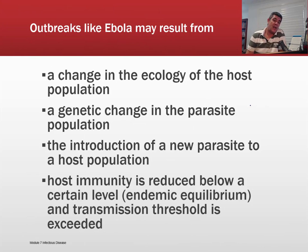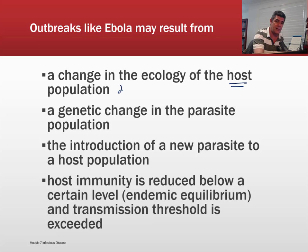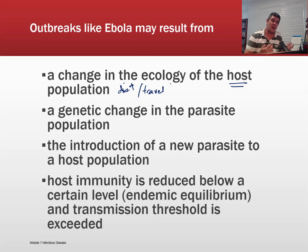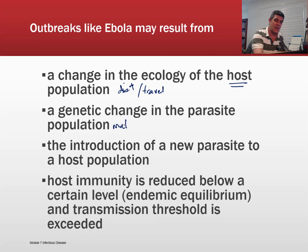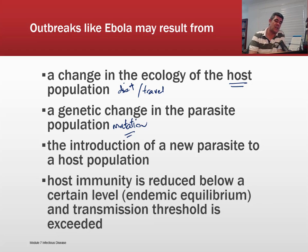What could cause an outbreak like Ebola? A few things may have contributed. The first is a change in the ecology of the host population — this could relate to diet, travel, or how we interact with others. Ecology refers to how we interact with our environment, and changes in what we're eating, where we're going, or our migration patterns can impact the outbreak of a disease. The second is genetic change in the parasite population — mutation is a key example of something that moves a pathogen in a direction it may not have been heading before.